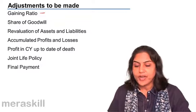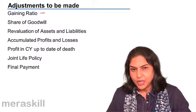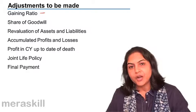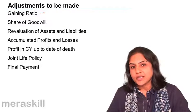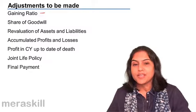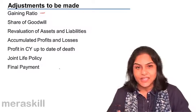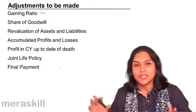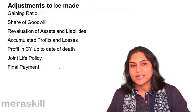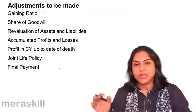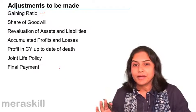On death of a partner, the amount which is due to the partner on account of his capital, on account of his share of goodwill, on account of the joint life policy, on account of revalued profits and losses — all this has to be transferred to his executor's account. The executors are the persons who will execute the will of the dead partner, ensure all taxes are paid from the property, and that all belonging to the partner is transferred to the legal heirs.